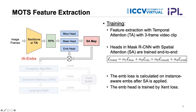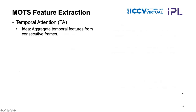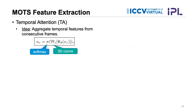The idea of temporal attention is to aggregate temporal features from consecutive frames. The formula defines our temporal attention: we take features from each of three consecutive frames, concatenate them, pass through three 3D convolutions, and then apply a softmax function to obtain the final aggregated features.